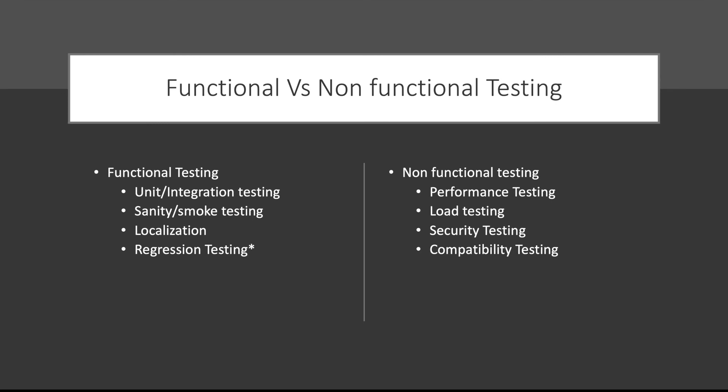In white box testing, nowadays SDEs can perform it if they have code knowledge. One way it is helpful is: if you know the code and go through all the loops or conditions, from there you can find test cases and give them to the QA who is doing black box testing. The QA then knows that if a certain input is given it goes to a specific scenario where an error may occur. That is how white box and black box testing can be done together.